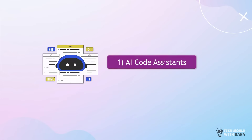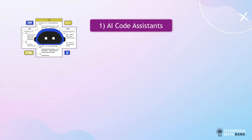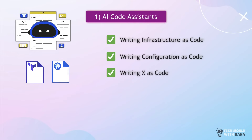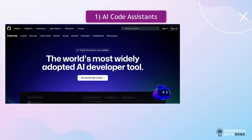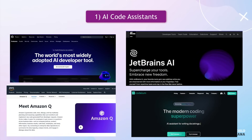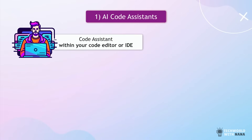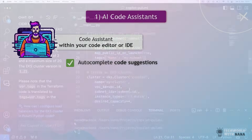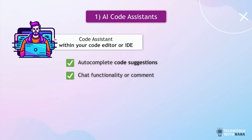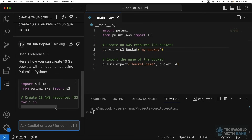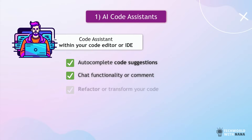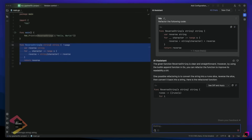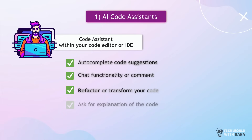The first category is AI code assistance. The main use case for such tools is writing infrastructure as code or configuration as code. A popular example is GitHub Copilot, and there are lots of very similar tools that basically do the same. They are your code assistant within the code editor or IDE. They help you with code suggestions and code completions — basically predicting what you want to code based on the current context. Or you can ask specifically for a code piece or entire code block by simply typing the logic in English. You can even ask it to refactor code, clean it up, find duplications, or ask for explanations and improvement suggestions.